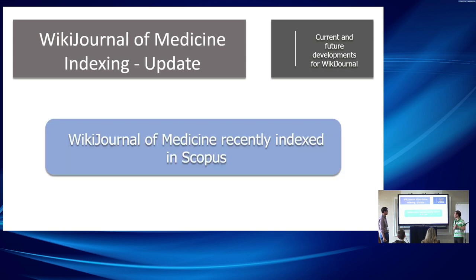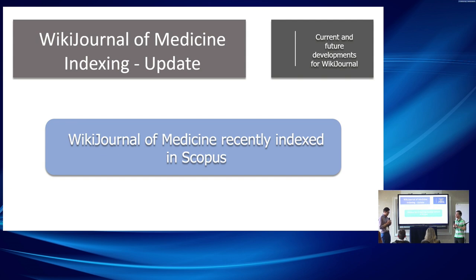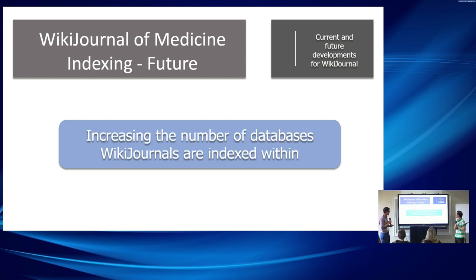Good news: recently — I think last year — WikiJournal of Medicine was indexed in Scopus, and since being indexed in Scopus we've started to receive more submissions. This is very important from the author's perspective, because when authors are looking for a journal to publish in, they always look for journals indexed in Web of Science, PubMed, and Scopus — reputable databases — because articles evaluated for career advancement and promotion must come from reputable publishers. That's how we were able to gain more submissions.